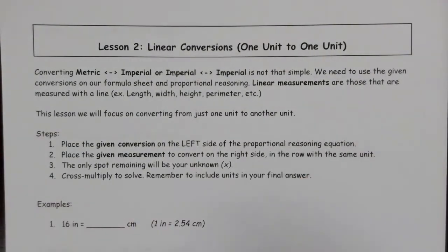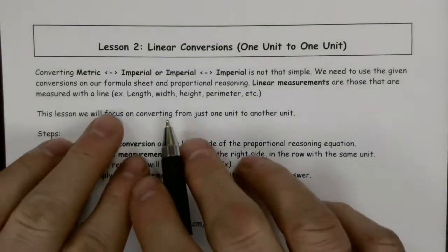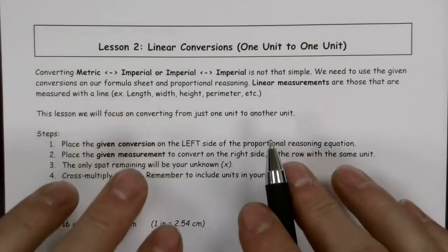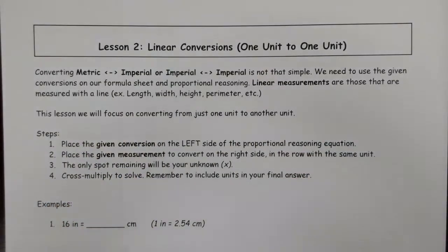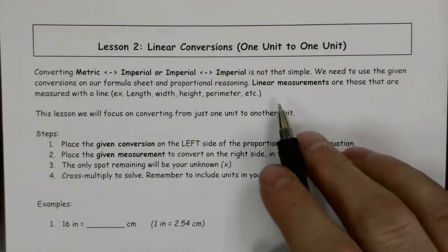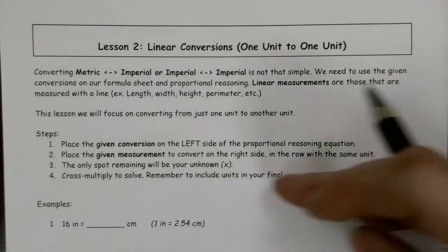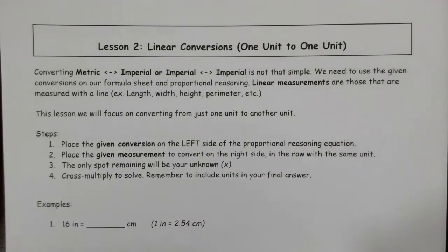So what you need is the conversion factor, which we're going to get from our formula sheet. Then we're going to set up a proportion to help us solve that. And remember that we're focusing specifically in this course on linear measurements — things used to measure along a straight line.